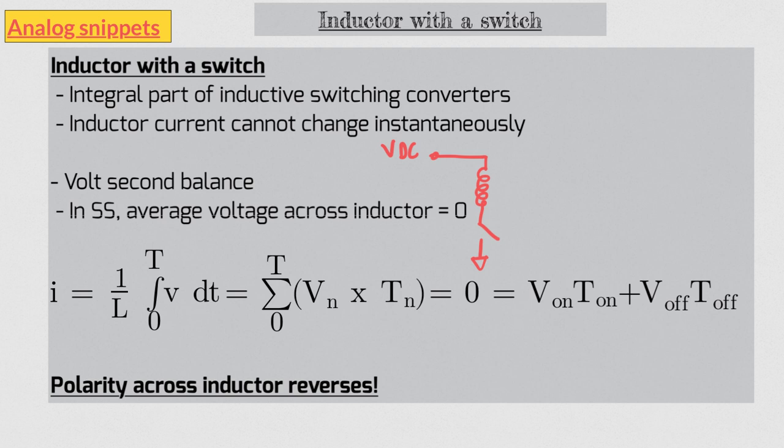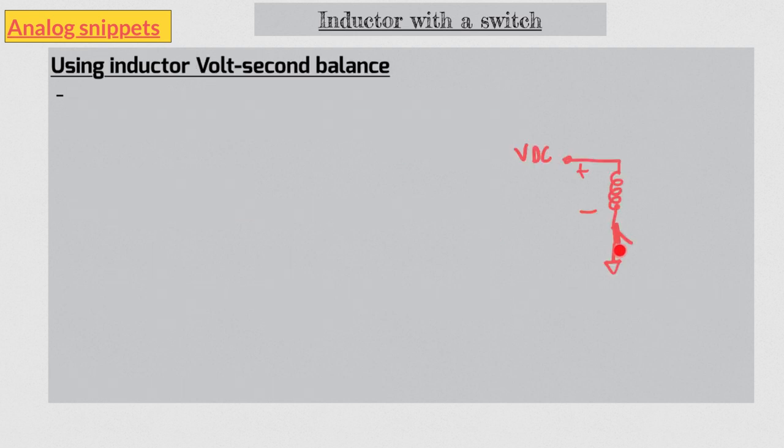So let's work out the problem again. When switch is on the top voltage of the inductor is positive. So when switch turns off bottom voltage will become more positive. And as a result bottom voltage has to go high.